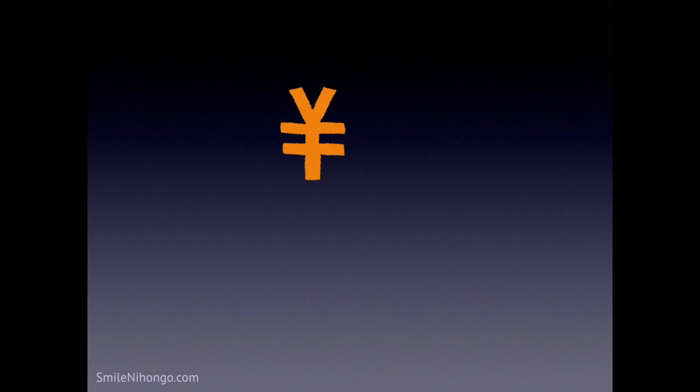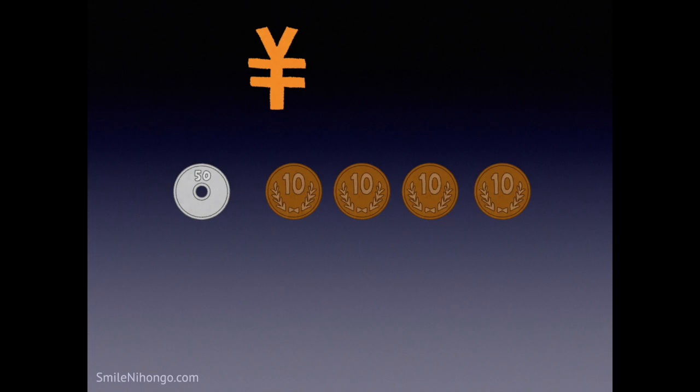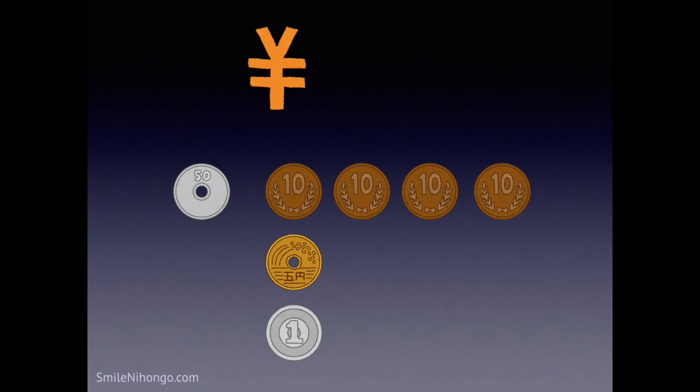Let's take a look at some nihon no okane here. This is the coin for 50 yen, and then this is the coin for 10 yen. And this is the coin for 5 yen — goen. And finally, this is the smallest one, the coin for 1 yen. Let's give four of them here.